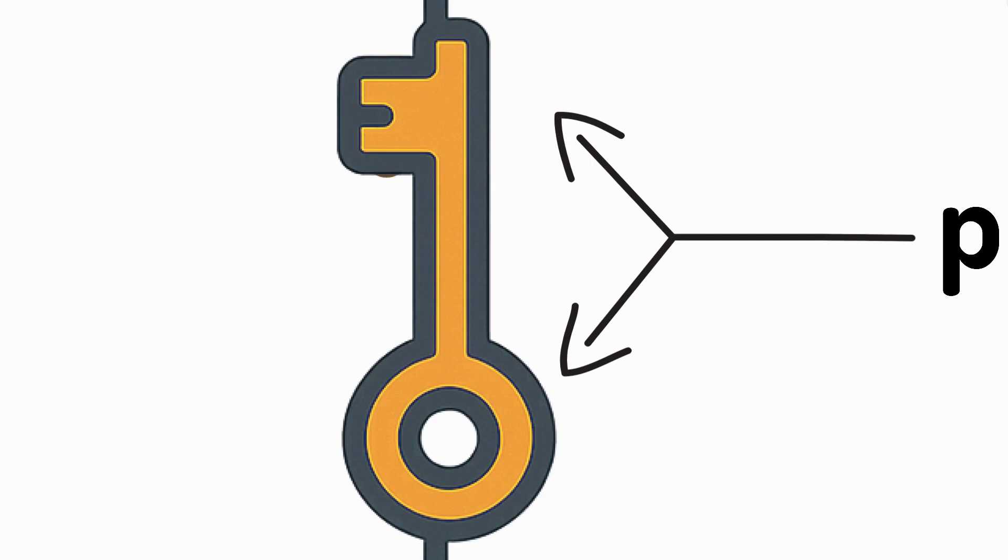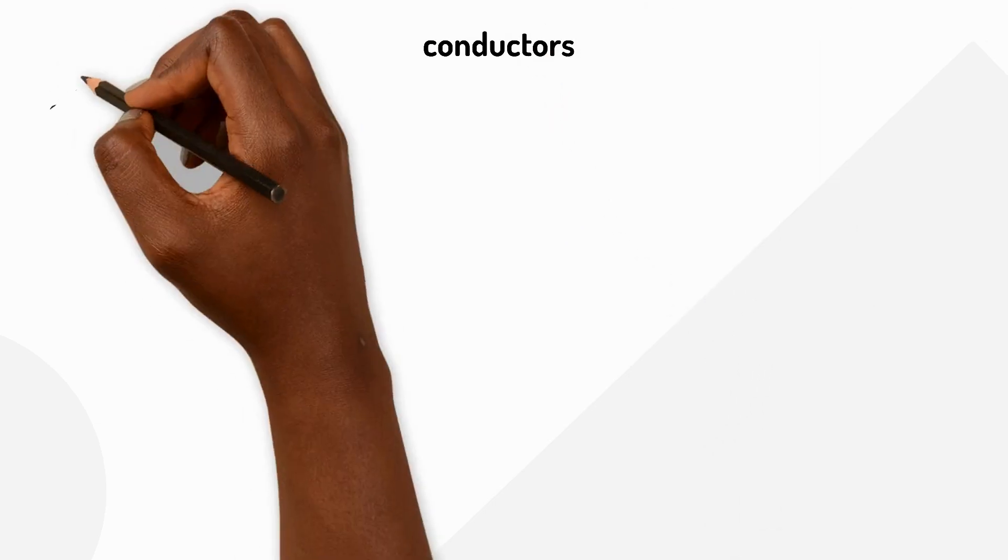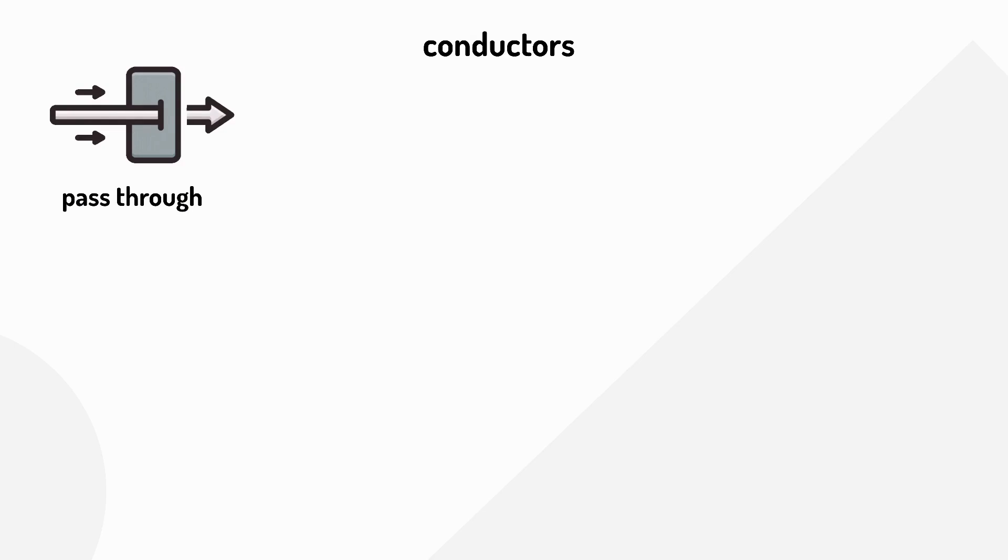Materials that let electricity flow through them are called conductors. The word conduct means to let something pass through. Conductors let electricity pass through easily.